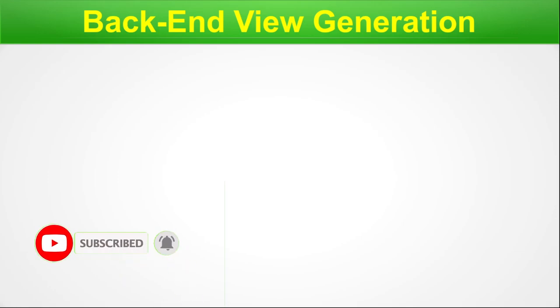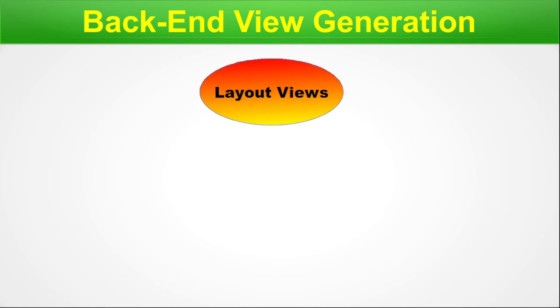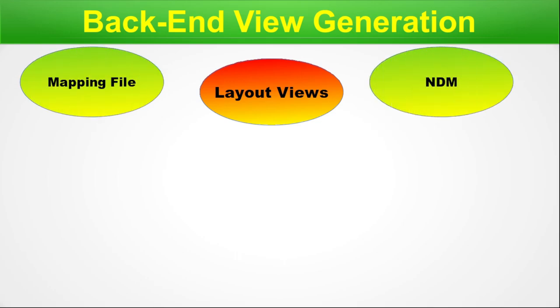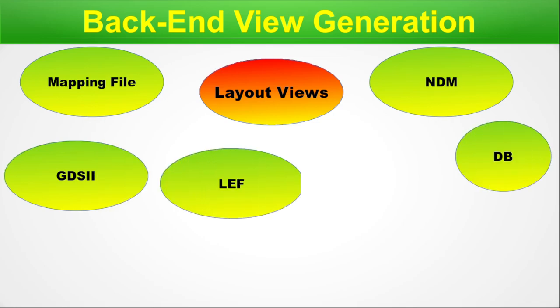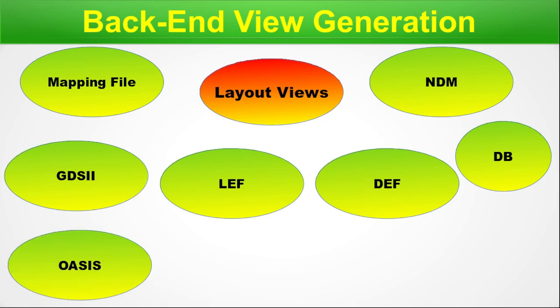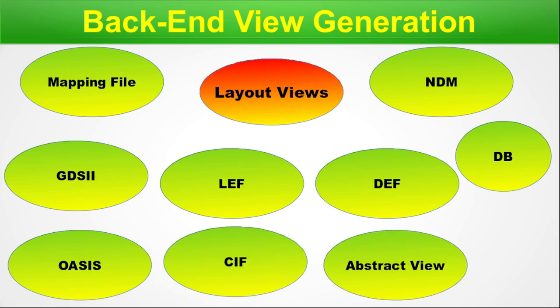Back-end views. The back-end views generated by standard cell designers include: layout views, mapping file, NDM file (Synopsys format), GDS2, DB, LEF, and DEF — where DB and NDM are Synopsys formats and LEF and DEF are Cadence formats. Additionally there are OASIS, PIF file, and abstract view. Physical verification views such as Hercules, EMIR, or Caliber can also be present. You can expect views corresponding to each step shown in the standard cell design flow.